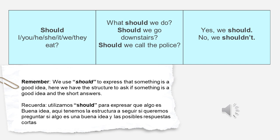To create a question with 'should,' first we write 'should,' then the subject — it can be I, you, he, she, we, or they — and then the verb that we are going to use in the sentence.